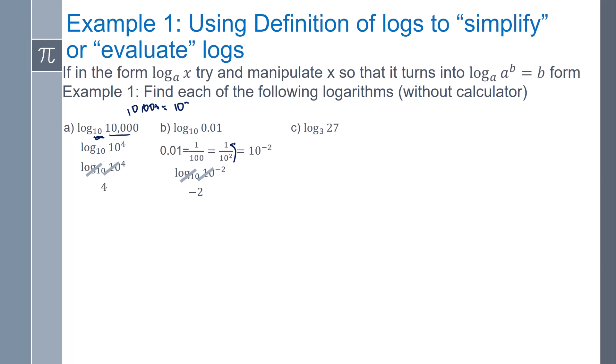Same idea here, log base 3 of 27, what power do I need to raise 3 to get me 27? So I can rewrite the 27 as 3 to the 3rd. The log base 3 and the 3 cancel out, and I'm left with 3.